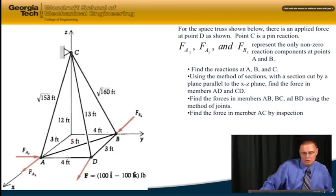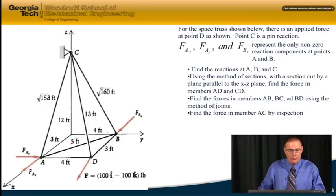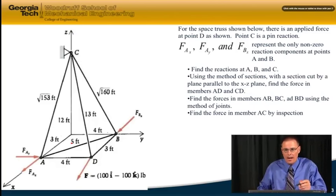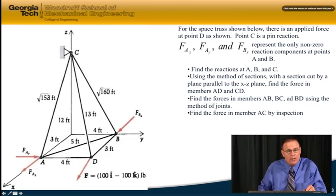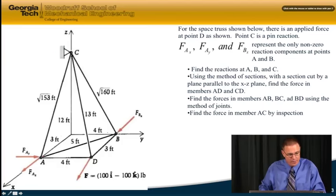Here's a space truss, very similar to the tripod. We have an applied force at point D down here that's given. We have a pin connection at C, or what's also called a ball and socket joint. The only other non-zero reaction components are at points A and B as shown. We want to solve this piece at a time. In this module we're just going to find the reactions at A, B, and C.